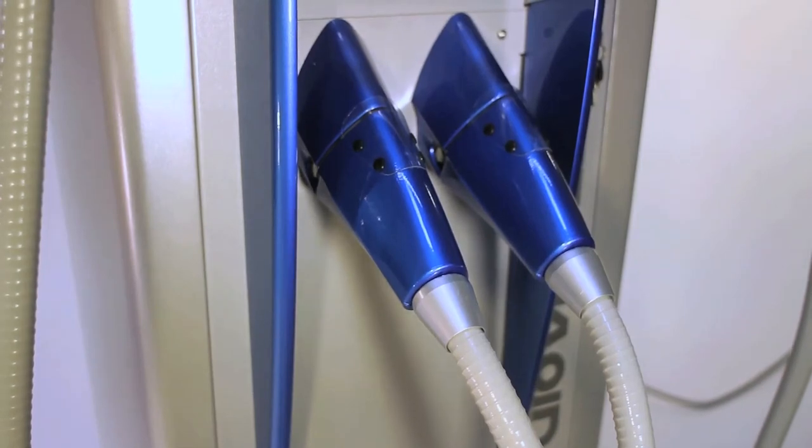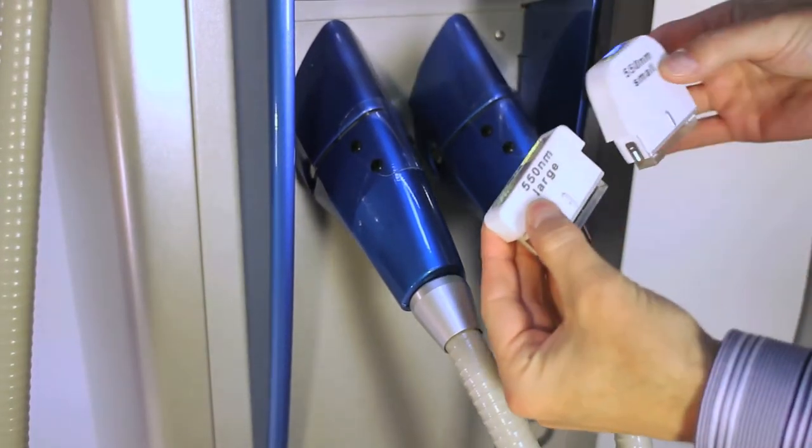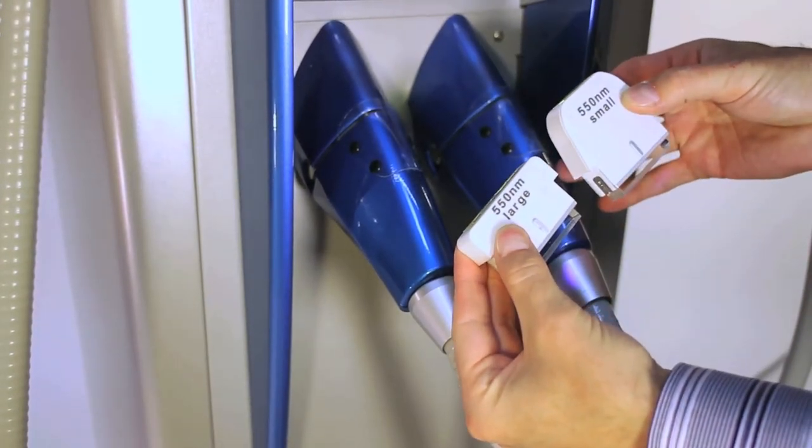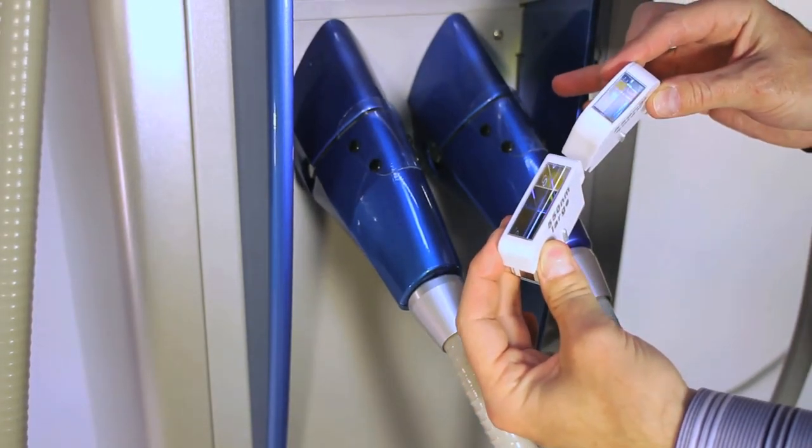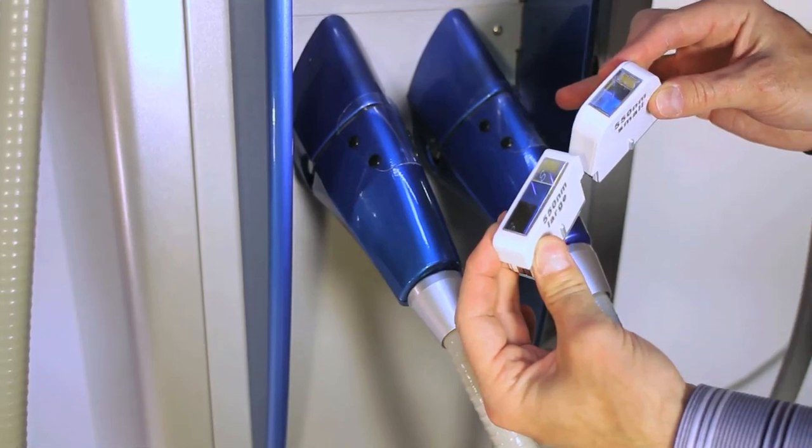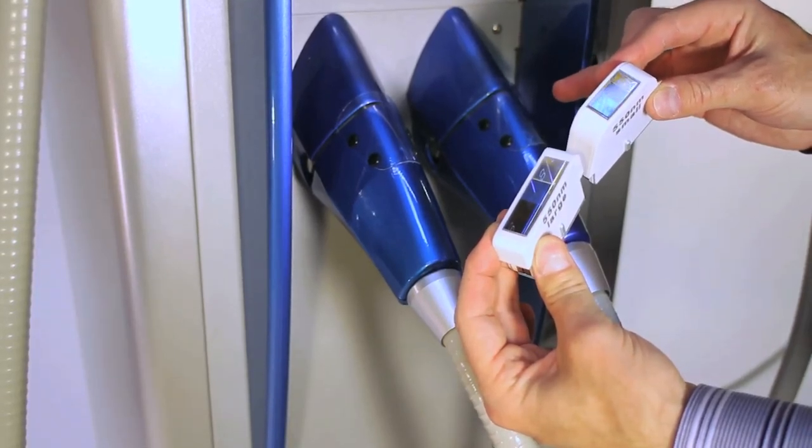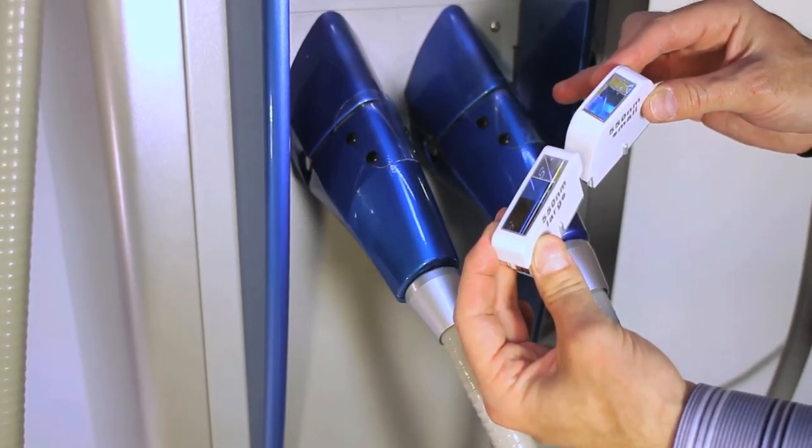Like we talked about with the filters earlier, all filters come with either a small spot size, 13 by 25 millimeters, or a large spot size, which is 13 by 45 millimeters.